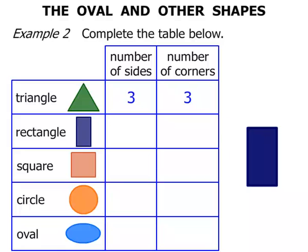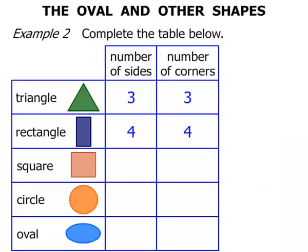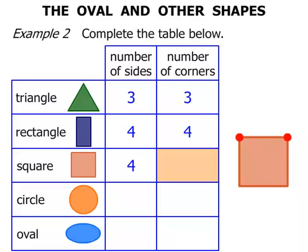Now the Rectangle. Number of sides: one, two, three, and four. Number of corners: one, two, three, four as well. Now let's look at the Square. The number of sides: one, two, three, four — so four sides for a Square. Number of corners: one, two, three, four. So four corners for a Square.